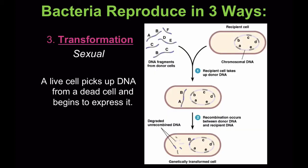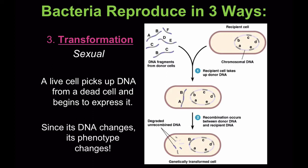Transformation is when a live cell picks up DNA from a dead cell and begins to express it. Since its DNA changes, its phenotype changes. The knowledge of how this reproduction happens helped scientists with DNA biotechnology — for example, inserting the DNA information to produce insulin into bacterial cells so we can make insulin for diabetics.